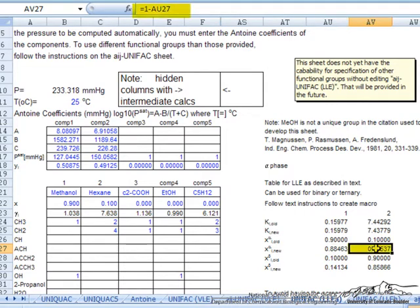And so here we just use 1 minus x1 alpha to get x2 alpha and then for our x1 beta nu we actually multiply our k values times our x1 alpha values for both cells as is described in the textbook.